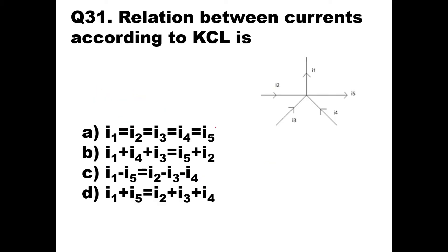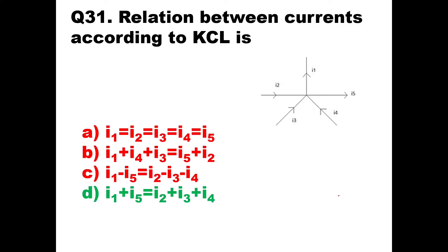Question number 31: relation between currents according to Kirchhoff's current law. KCL says that at a particular node, the algebraic sum of incoming current equals the algebraic sum of outgoing current. From the figure, incoming currents are I2, I3, and I4; outgoing currents are I1 and I5. So I2 + I3 + I4 = I1 + I5, which corresponds to option D.